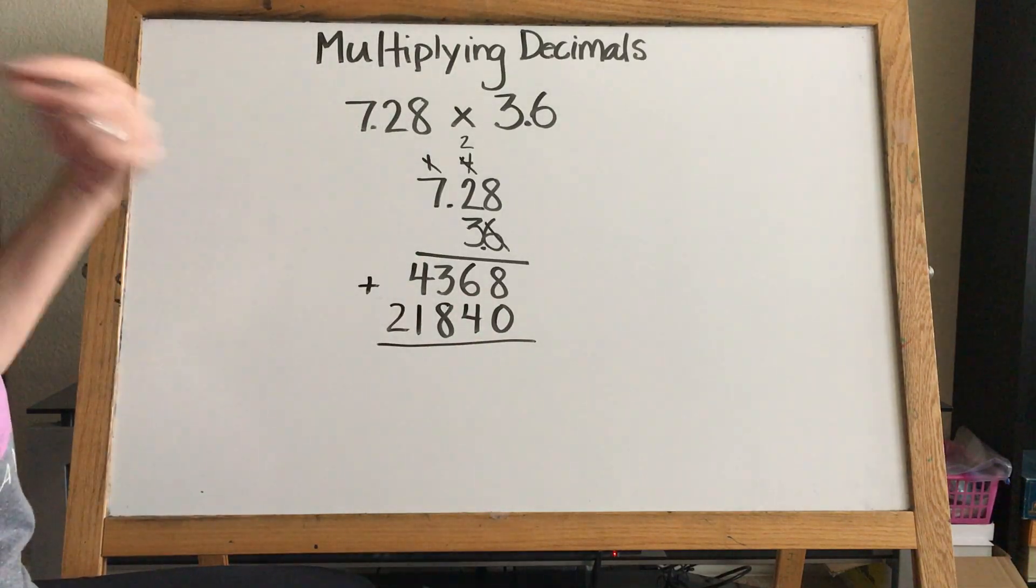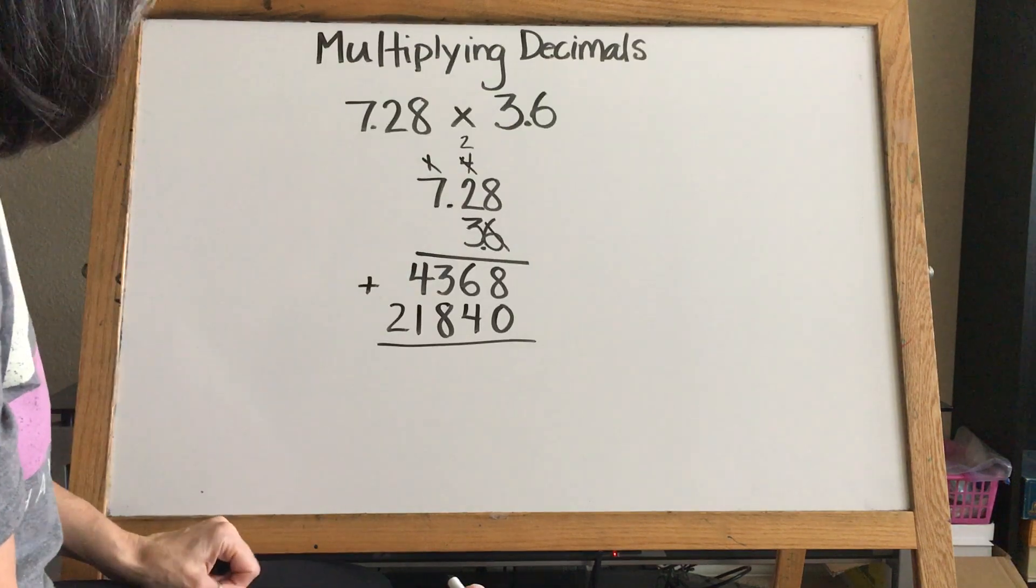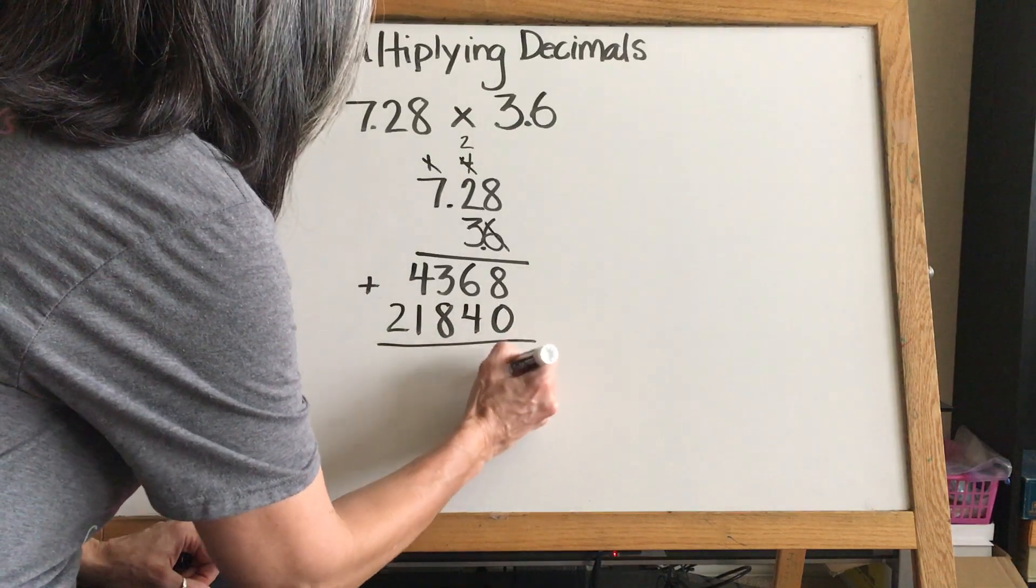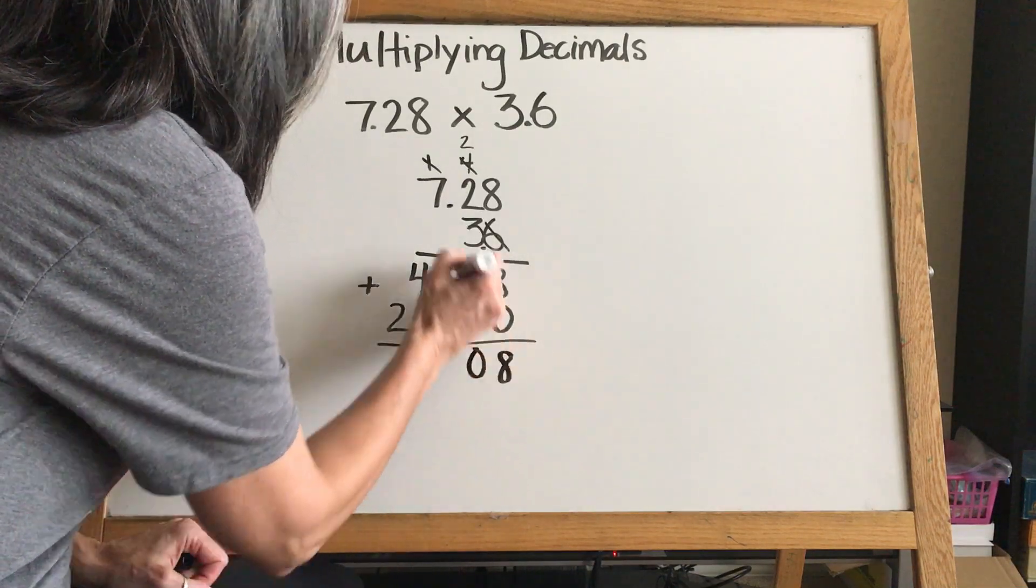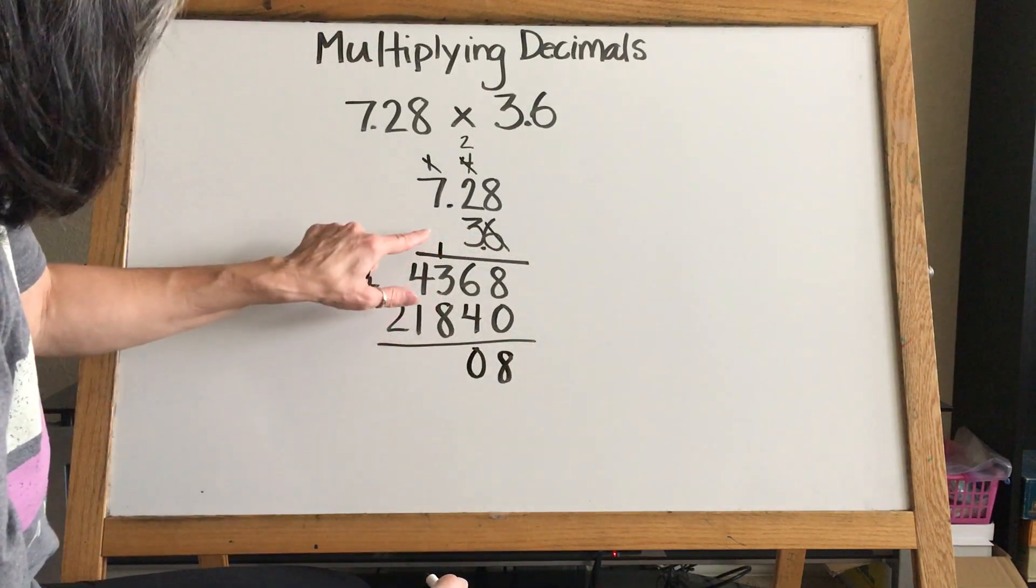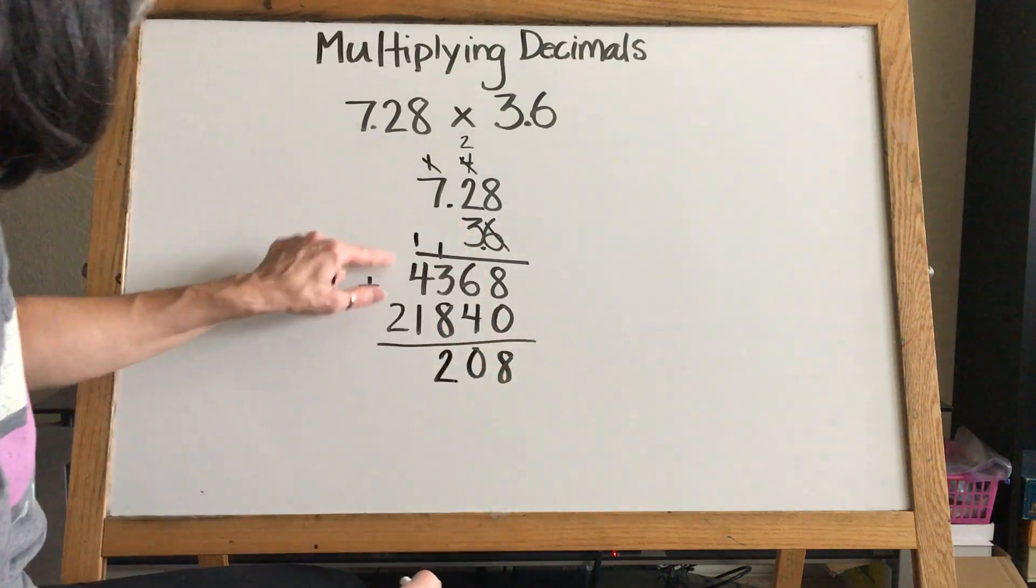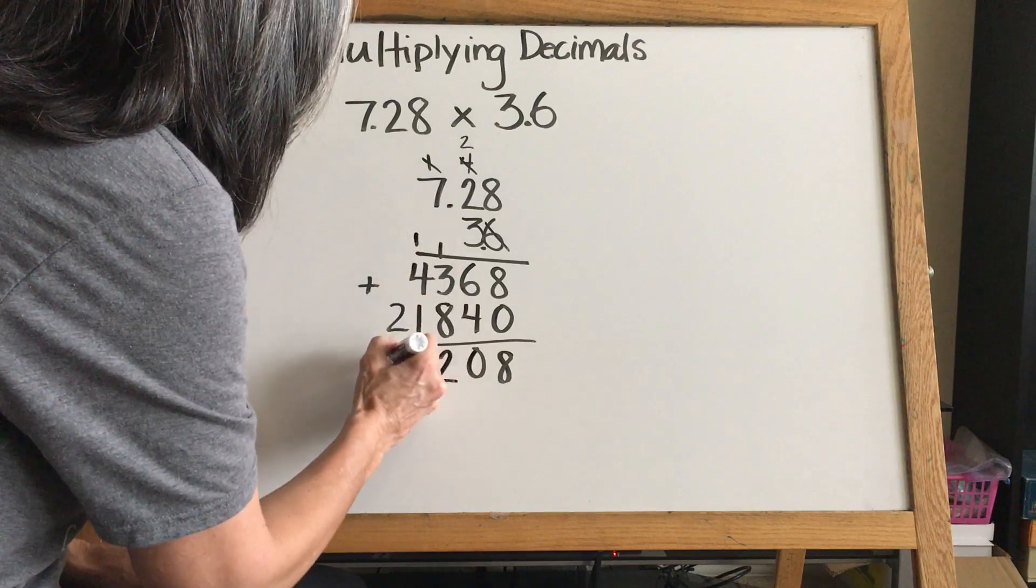Then we're just adding: eight plus zero is eight, six plus four is ten, carry our one. Eight plus one is nine, plus three is twelve. Put our two, carry our one. Four plus one plus one is six, and two plus nothing is two.